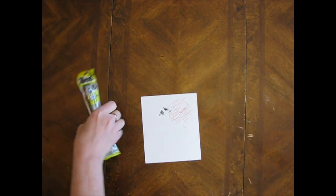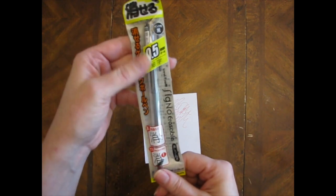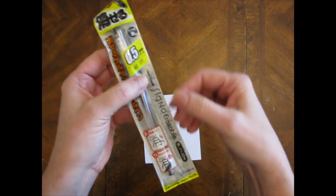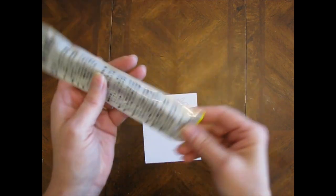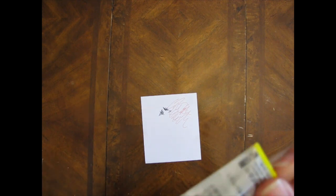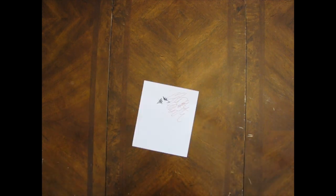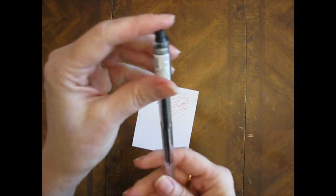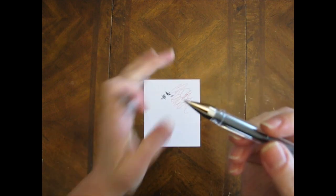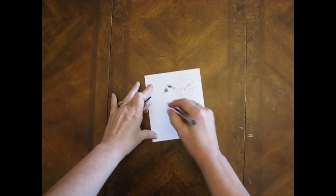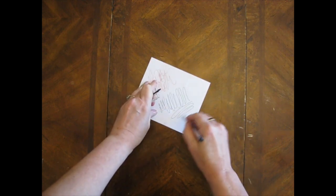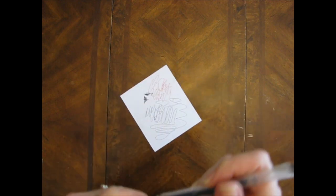And then this one I grabbed because I hadn't seen this kind before. It is a Signo erasable pen. Signo is Uniball, that's the brand. So let's just see what this is about. Here we go. Uniball Signo erasable. Ooh, nice fine point. Okay, yep, looks good. Comes with a little eraser.